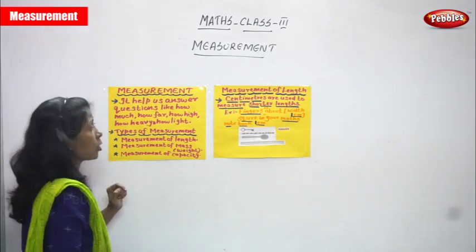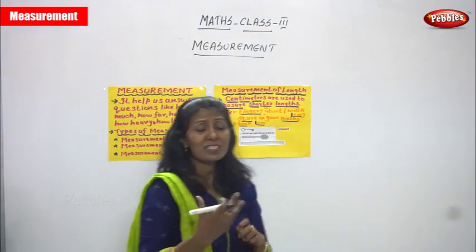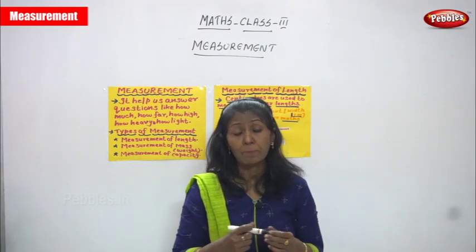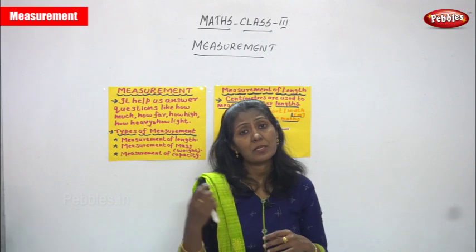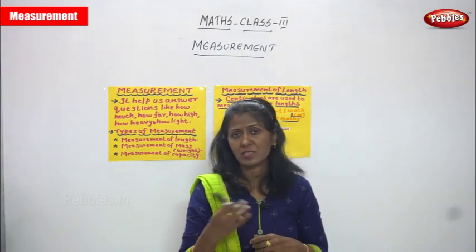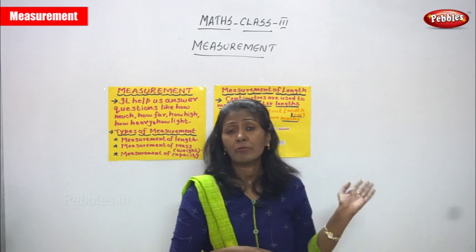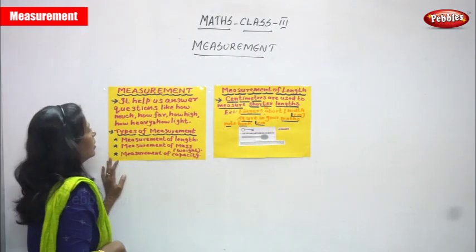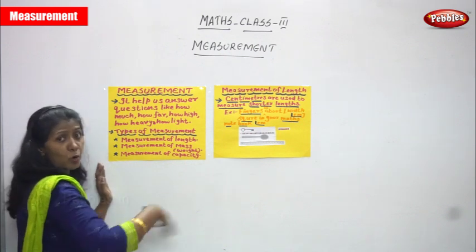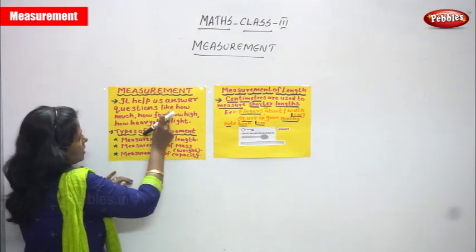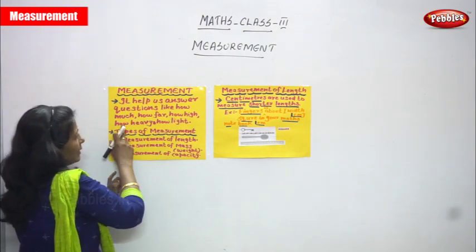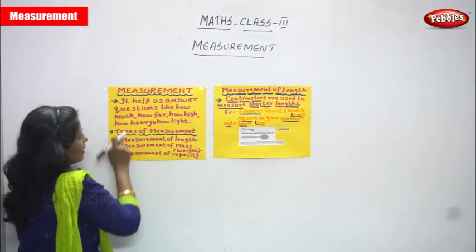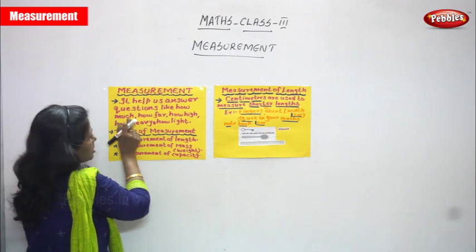For example, 'how much' — we generally use mass for that, meaning weight. We use one kg, half a kg, or quarter kg. Today we say gram and kilogram for 'how much.' So 'how much' comes under the measurement of mass, which uses gram and kilogram.